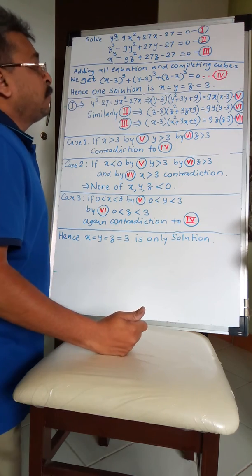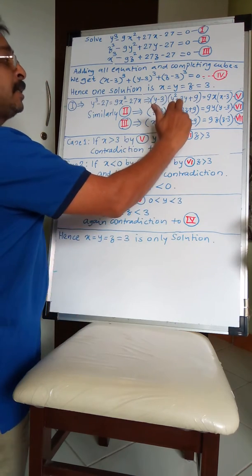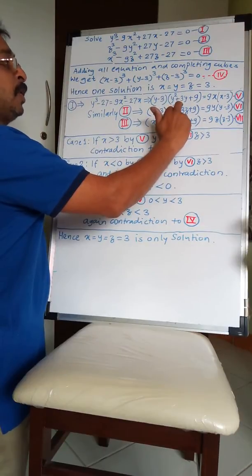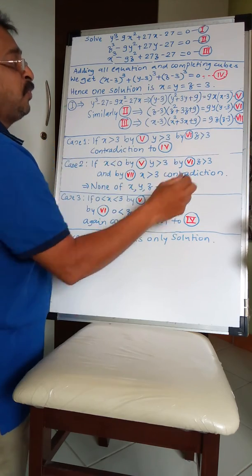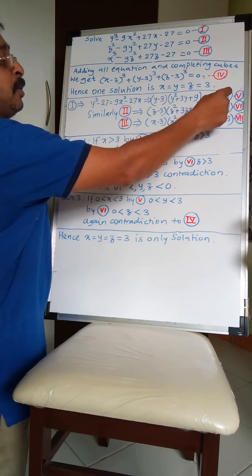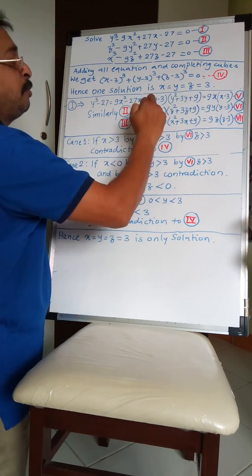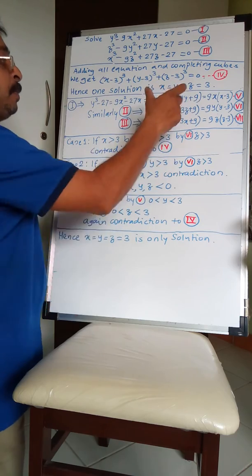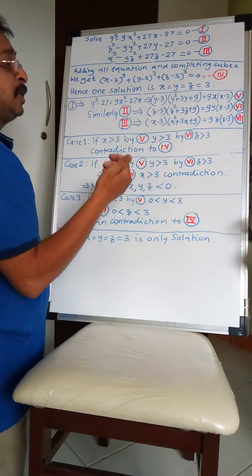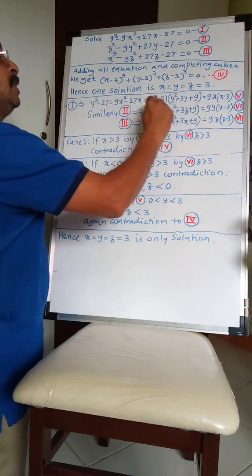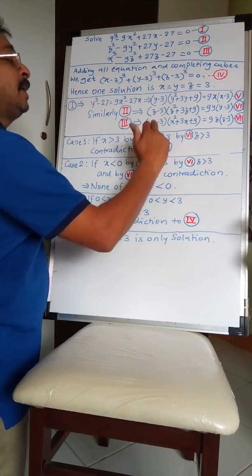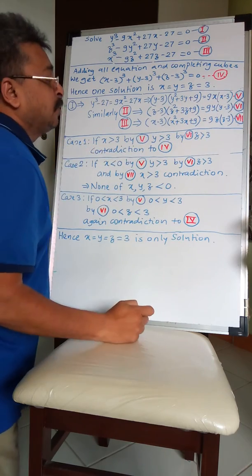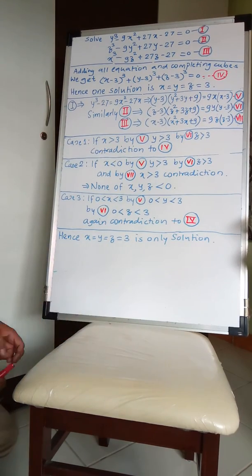From this factorization, we know that the bracket (y² + 3y + 9) is always positive for every value of y, because its discriminant is less than 0. Therefore, the parity of the LHS and RHS will be controlled by the values of x and y. The second and third equations are similarly factorized — we call them equations 5, 6, and 7 for further use.